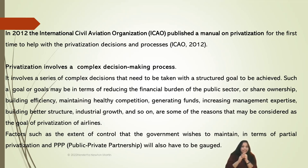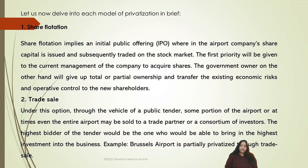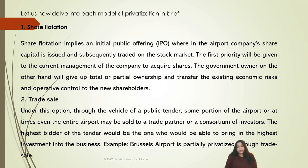Factors such as the extent of control the government wishes to maintain — in terms of partial privatization or PPP (public-private partnership) — will also have to be gauged. The first model is share flotation, which simply implies an Initial Public Offering (IPO), wherein the airport company's share capital is issued and subsequently traded on the stock market. First priority will be given to current management to acquire shares. The government owner will give up total or partial ownership and transfer the existing economic risks and operative control to the new shareholders.